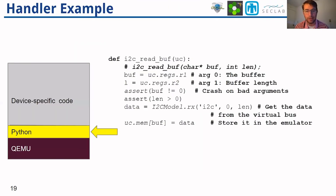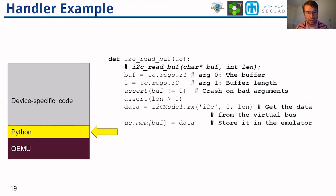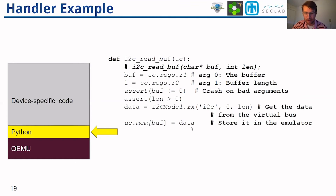Here is an example of a handler written in Python. We're replacing the I2C read-buffer function. When that function gets called within the firmware, it will execute this Python code, which first reads out the location of the buffer and its length, checks to make sure it's valid, then retrieves from the model the data to be written back into the firmware, which is written back on the last line of the example.